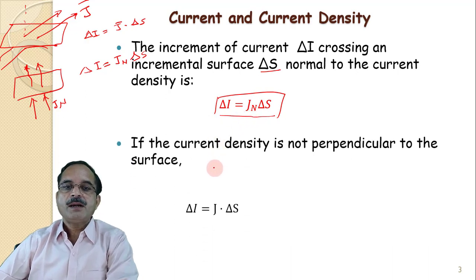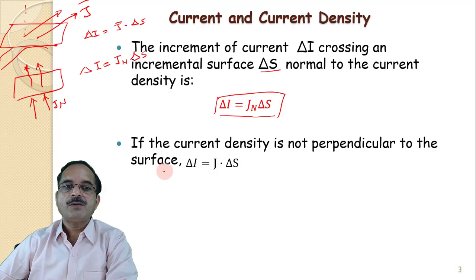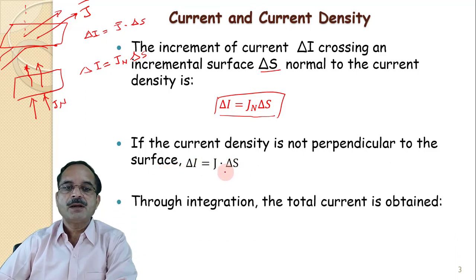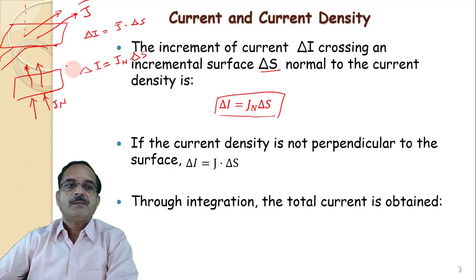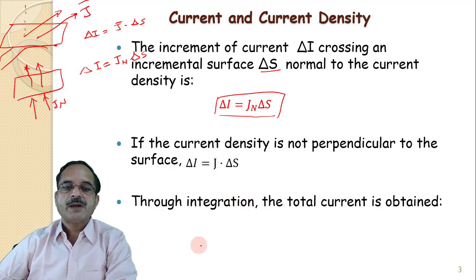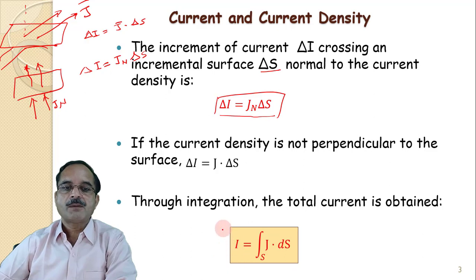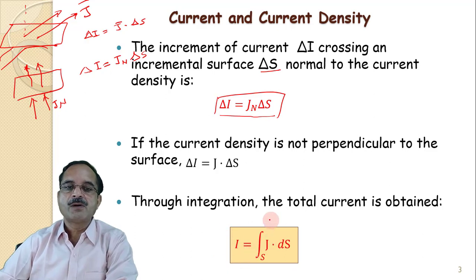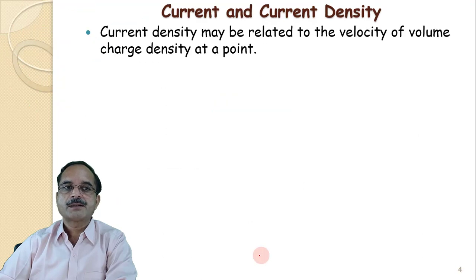If the current is not perpendicular to the surface, then it will be J dot delta S. By taking integration over the entire surface, we can get the total current passing through the surface: I equals the surface integral of J dot dS.